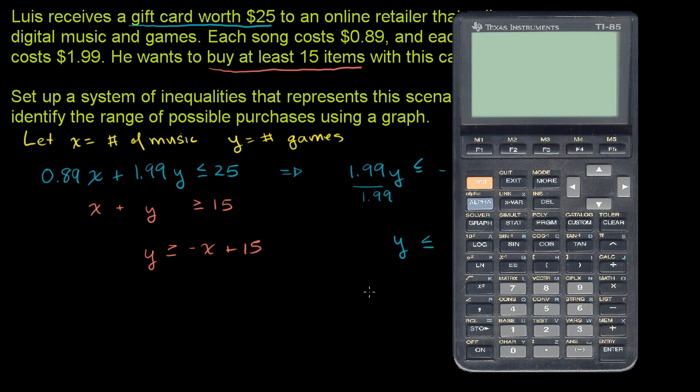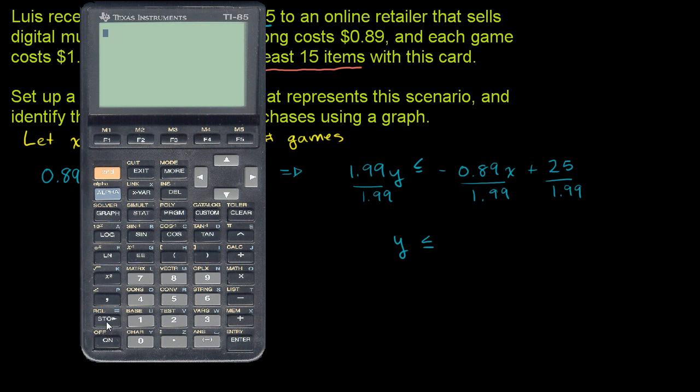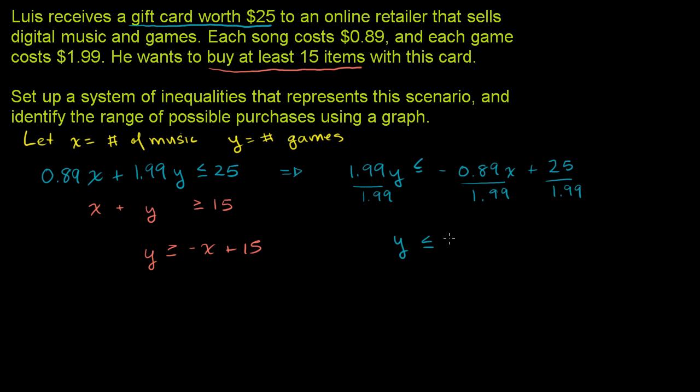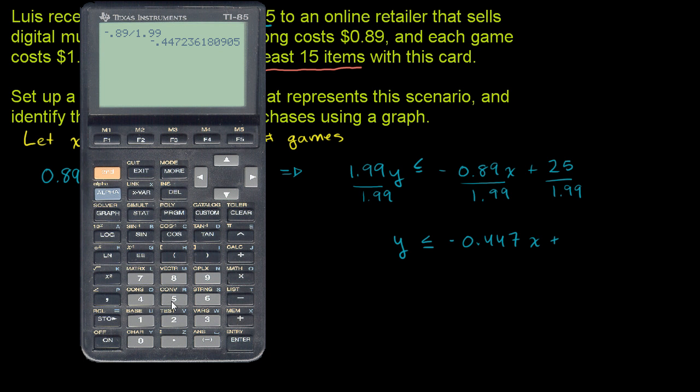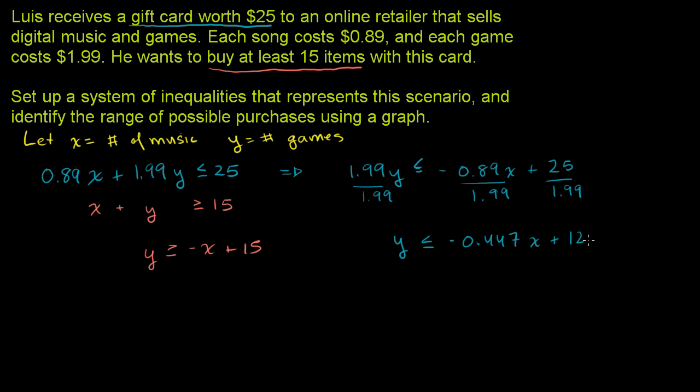So the slope is negative 0.447. And 25 divided by 1.99 equals 12.56. So we get y ≤ -0.447x + 12.56.